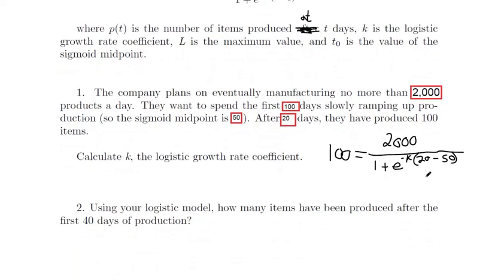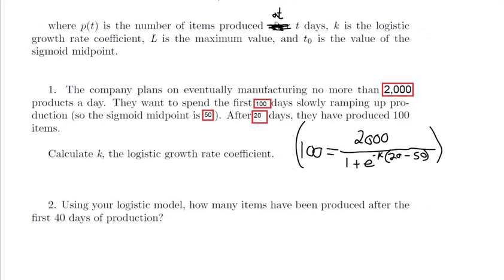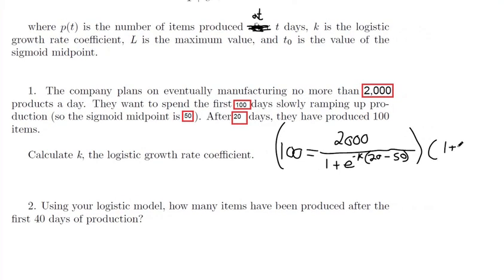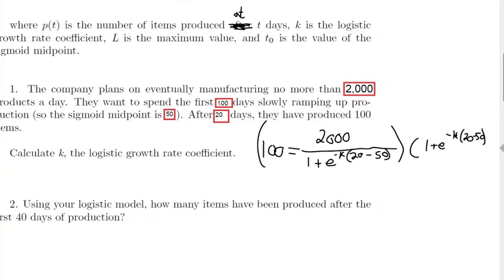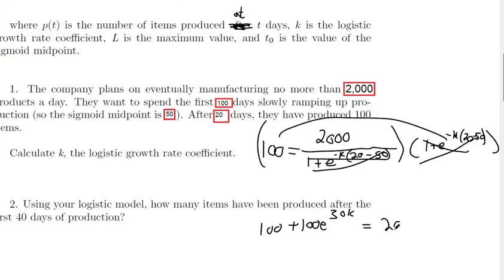Once we've plugged in all the information they gave us, it should look something like this. Now we have one variable, so we have something to solve for. That variable is right now in the denominator of a fraction. So we'd want to multiply both sides by 1 plus e to the negative k times 20 minus 50. Times the entire denominator, that makes this cancel out. We'll distribute that 100. We're going to have 100 plus 100 e to the negative k power times 20. And we can do that too, right? 20 minus 50 is negative 30. Negative 30 times negative k, that's positive 30k. That made our lives a little simpler there.